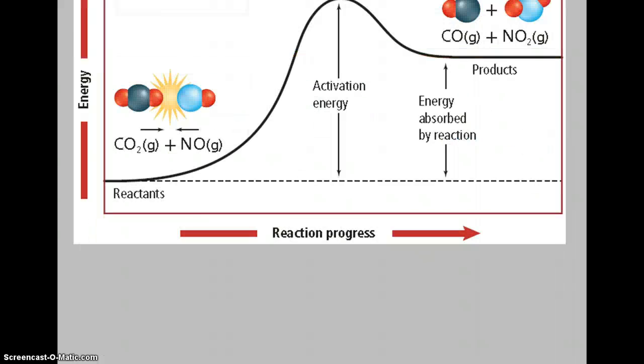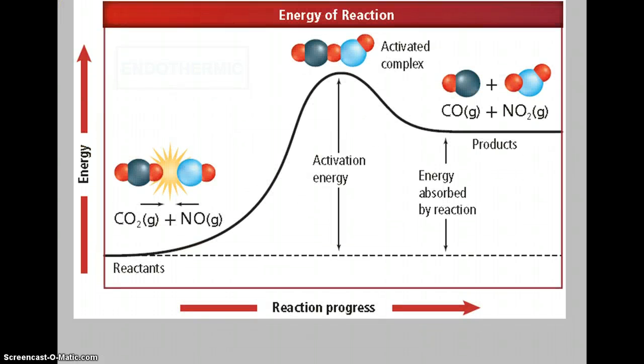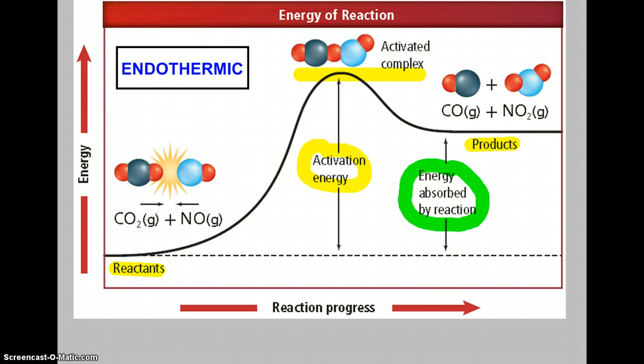Here we see another diagram. Again, reactants on the left, products on the right. We need to overcome the activation energy. And this time you see it's a much bigger hill. But still, the activated complex is at the top. And again, if there's enough energy, products will form. Not enough, back to being reactants. But here we see that the reactants have a lot less energy than the products, so there's energy absorbed by the reaction. When we have that situation, it's what we call an endothermic reaction, where the energy is absorbed from the surroundings by the reaction.